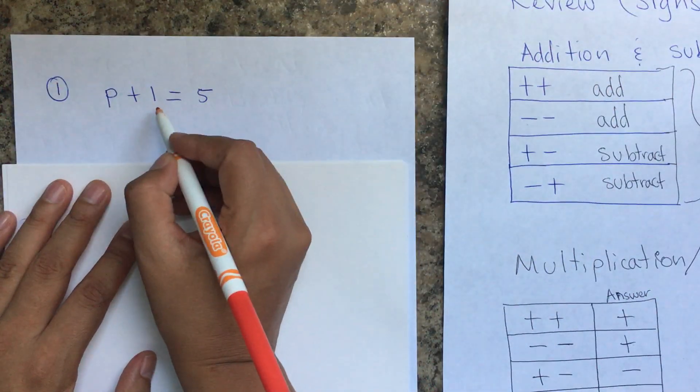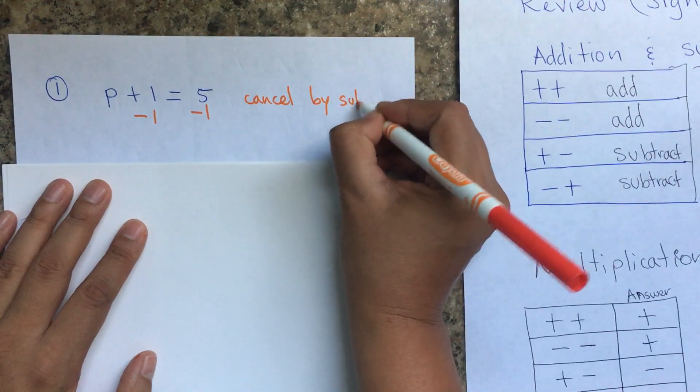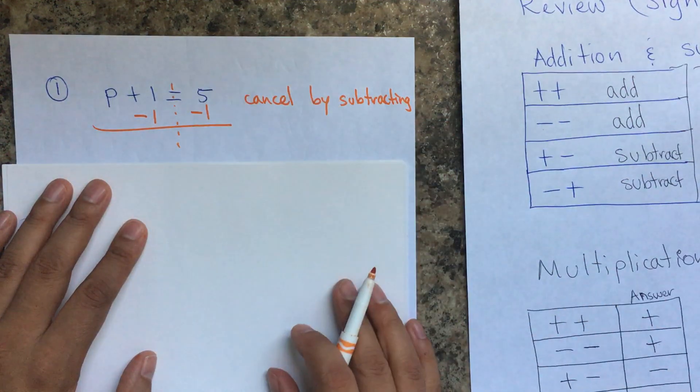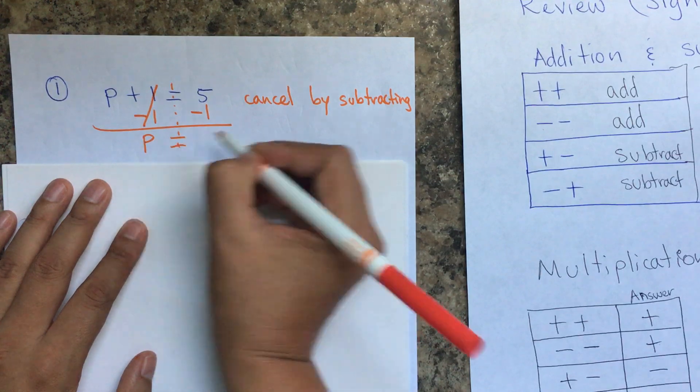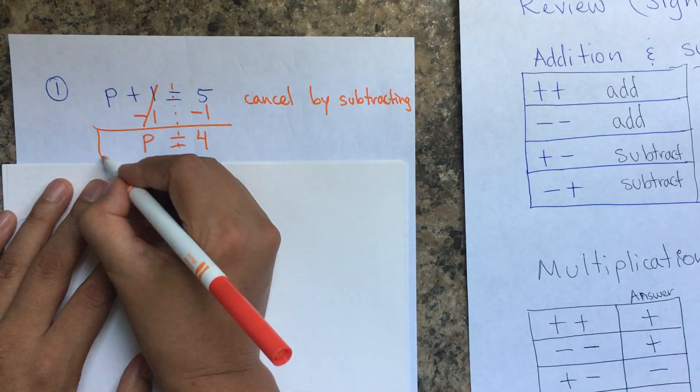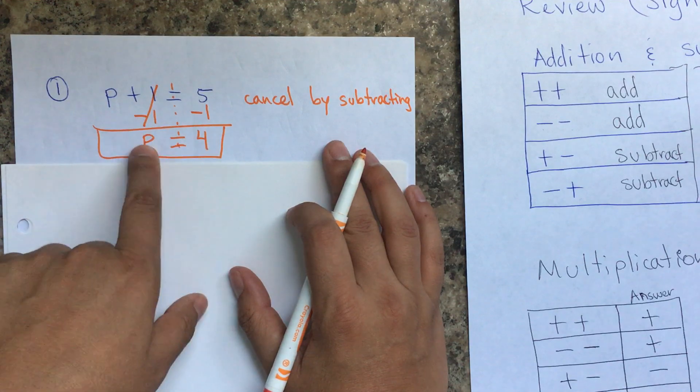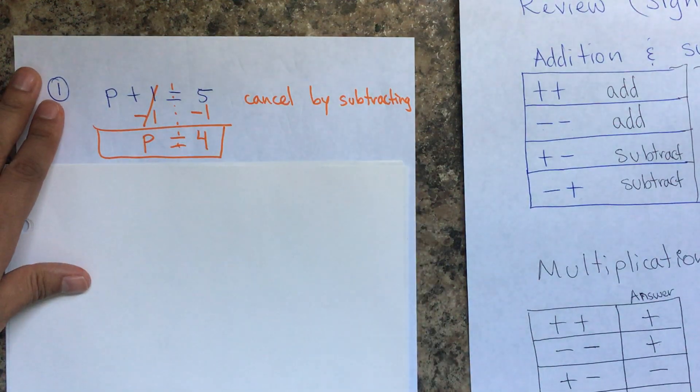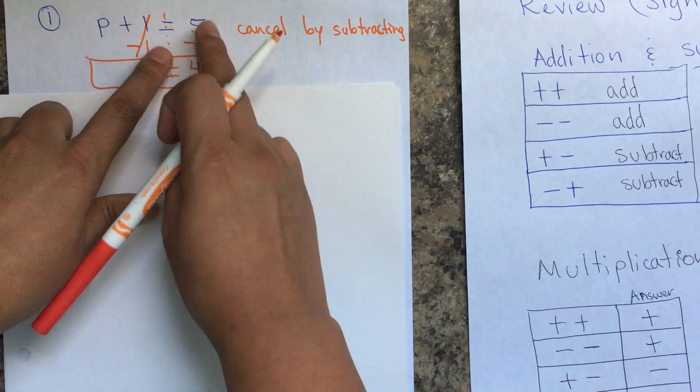So having that in mind, let's begin with the first exercise. So if I'm adding 1, the opposite is to subtract 1. So cancel by subtraction. Remember that you put the dividing line where the equal sign is. 1 minus 1 is 0. So you just end up with P equals 5 minus 1. And if you think about it, I can check by replacing P with the 4. The value of P is 4. So I can just say 4 plus 1. It is equal to 5. So it makes sense. That's a way of checking if your answer is correct.